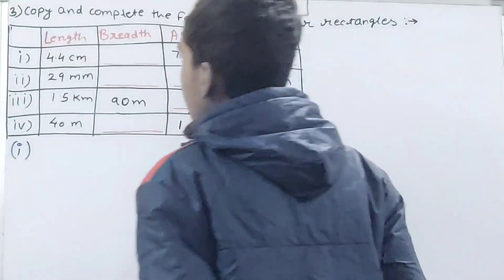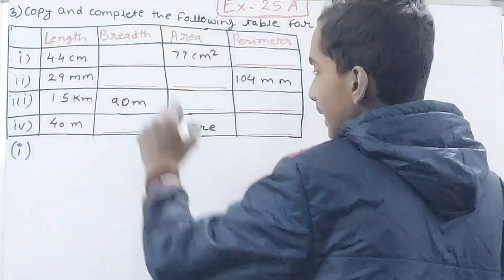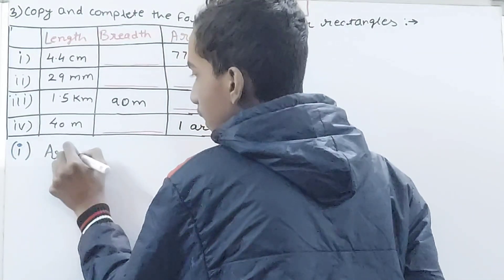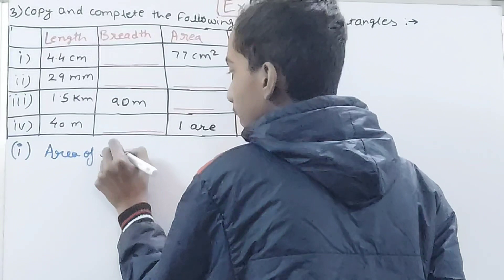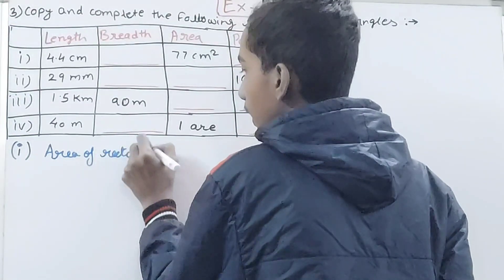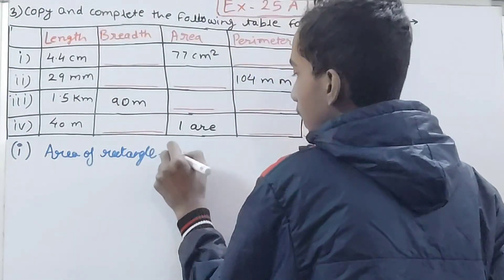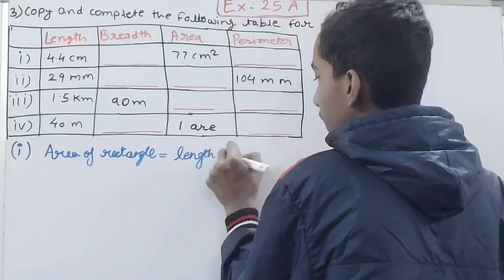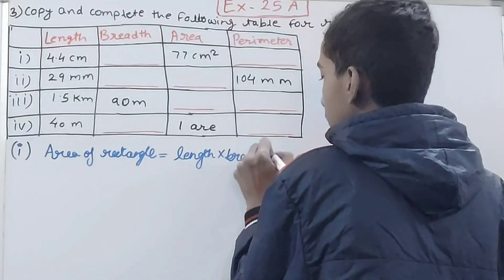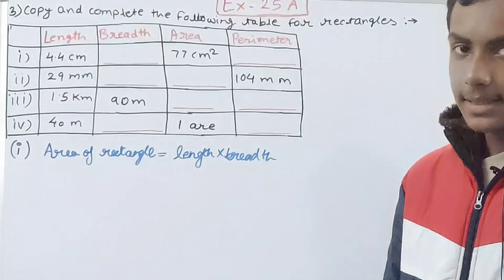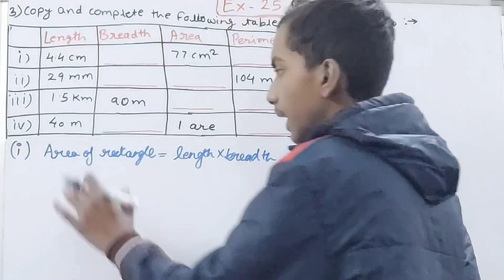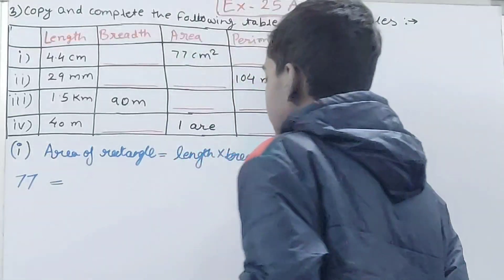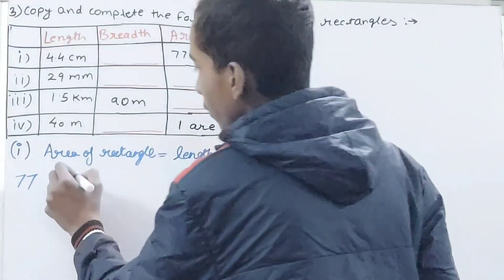For the first rectangle, we know the length and the area. We know that area of a rectangle is equal to length into breadth. So in place of area I put 77, and length is 4.4 centimeters, so: 77 = 4.4 × breadth.